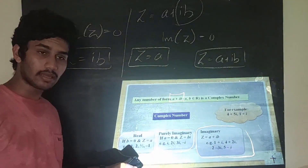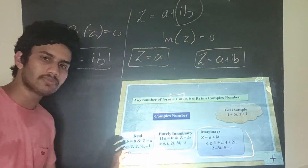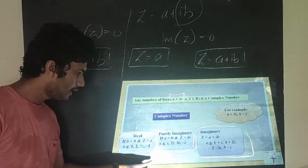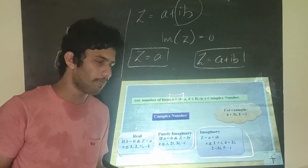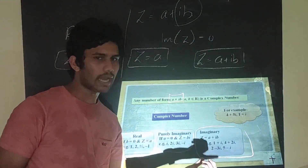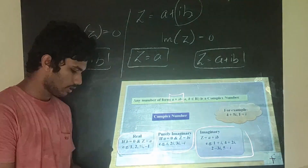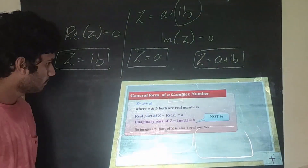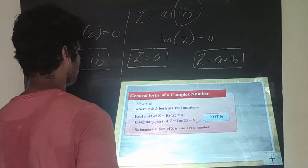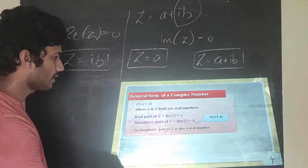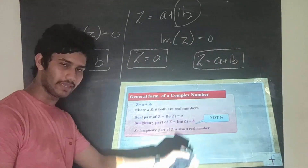All real numbers have imaginary part zero. All purely imaginary numbers have no real part. The form a + ib is the general representation of a complex number. To summarize: z = a + ib is the general form, real part of z is a, imaginary part of z is b — not ib.